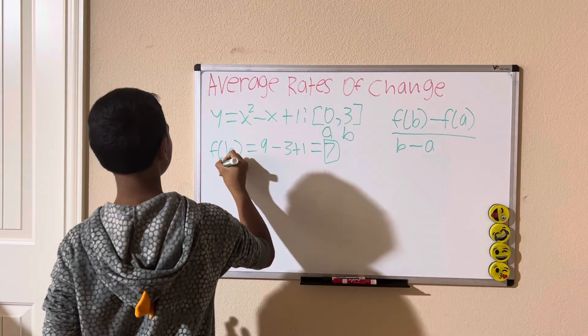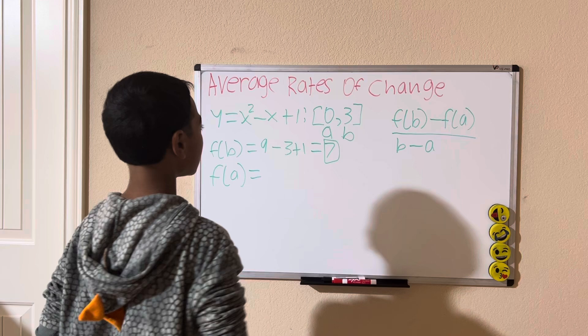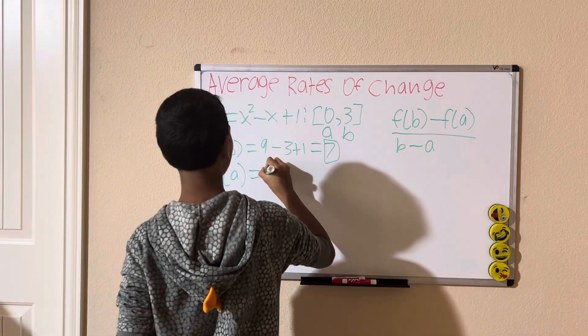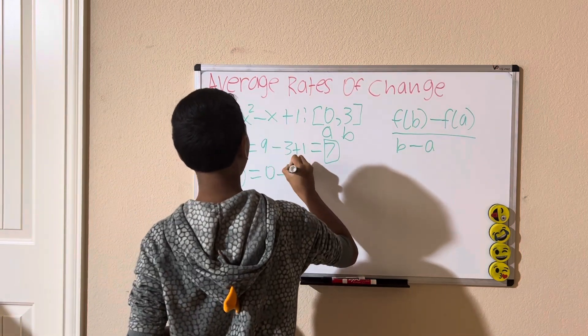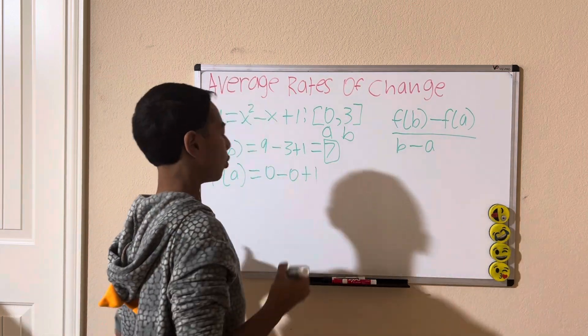Let's do f of a. Same thing, we're going to plug it into the equation. 0 squared is 0, 0 minus 0, plus 1, which is simply 1.